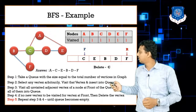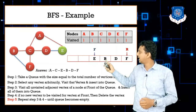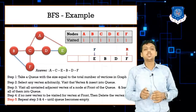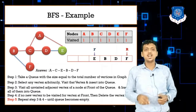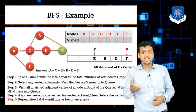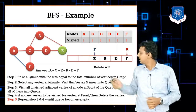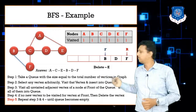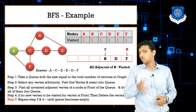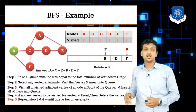Since C has no remaining unvisited adjacent nodes, we delete C. The front pointer moves to E. Node E's adjacent nodes are D and A — both already visited — so we delete E. The front pointer moves to B. B's adjacent nodes are also all visited, so we delete B.